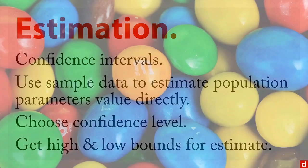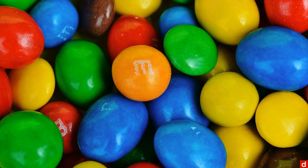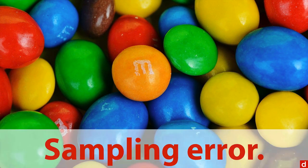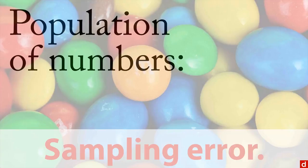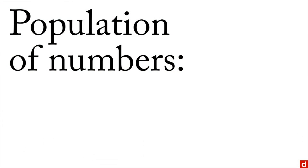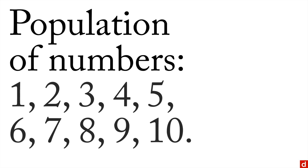What makes both of these tricky is the basic concept of sampling error. I have a colleague who demonstrates this with colored M&Ms — what percentage are red — and you get them out of the bags and you count. Let's talk about a population of numbers. I'm going to give you a hypothetical population of the numbers one through ten.